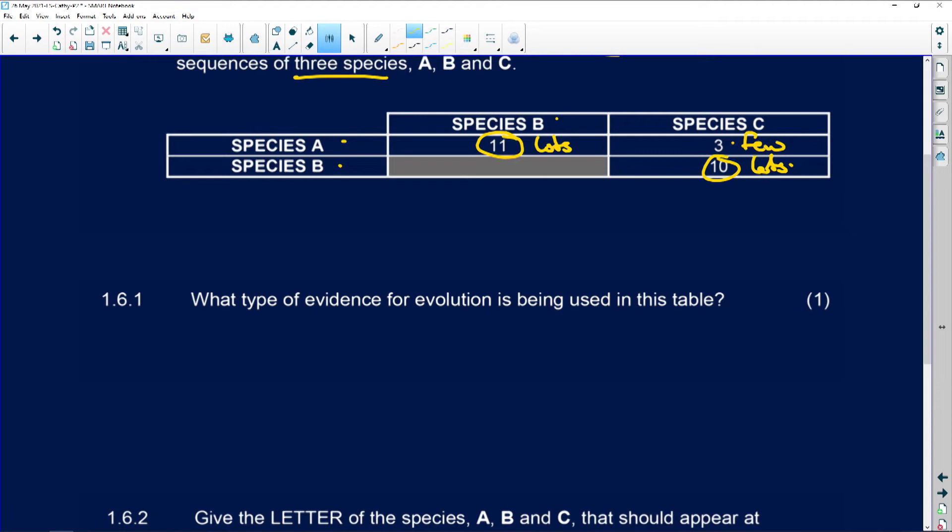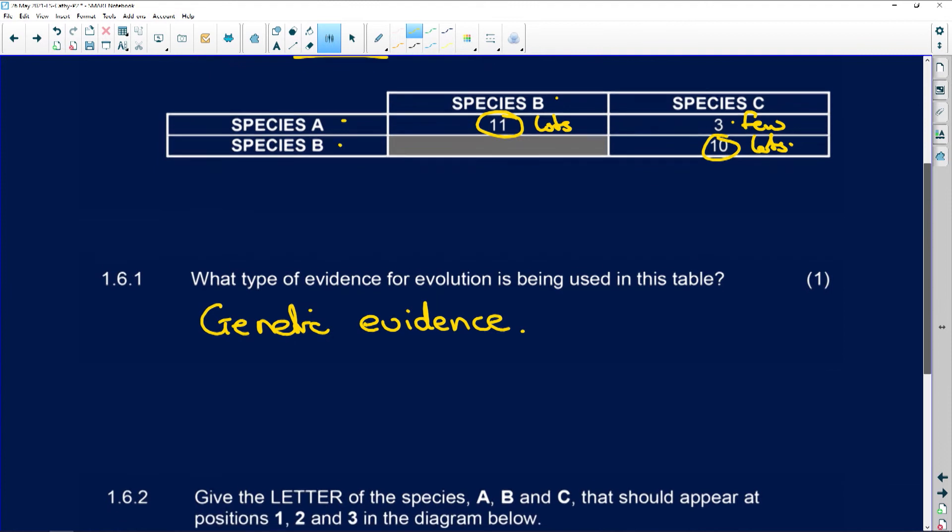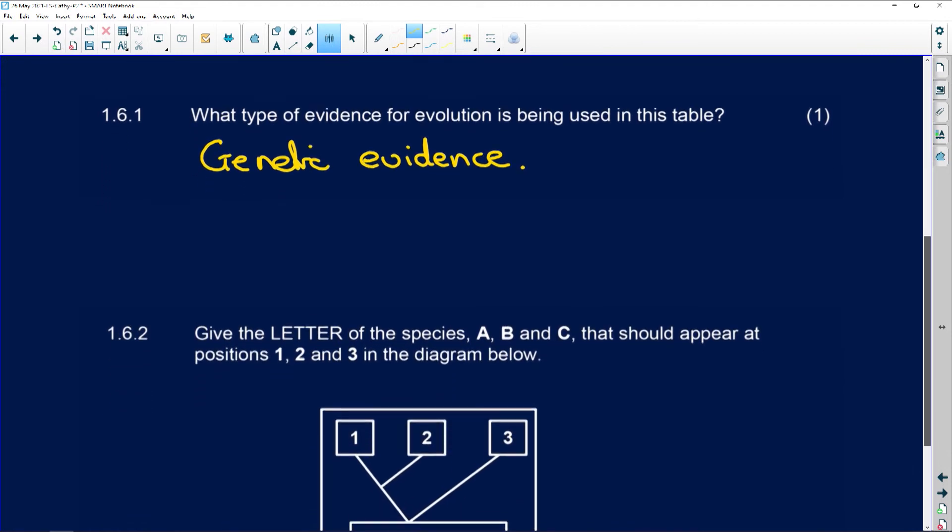What type of evidence for evolution is being used in this table? I've already told you it's genetic evidence. They're looking at the genetic makeup and what the sequence of the DNA is.